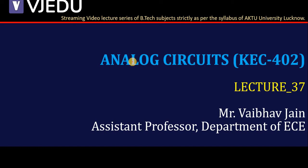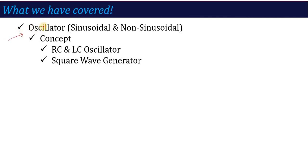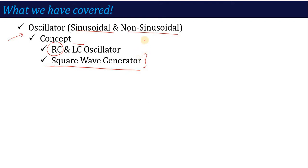Hello everyone, I welcome you all to the video lecture series of Analog Circuits. The subject code is KEC402 and here we are in lecture number 37. In the last lecture we covered Unit 3, which is based on oscillators, where we talked about sinusoidal and non-sinusoidal oscillators — RC oscillators like RC phase shift or Wien bridge, and LC oscillators like Hartley, Clapp, and Colpitts. We also saw a non-sinusoidal one called the astable multivibrator, also called a square wave generator. This is a very important unit — easy and very scoring.